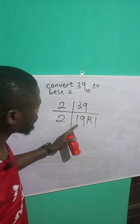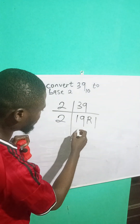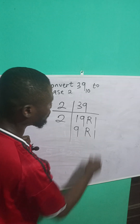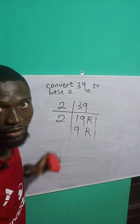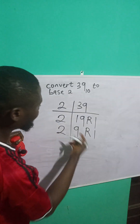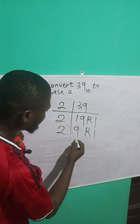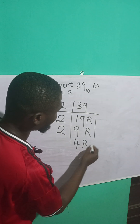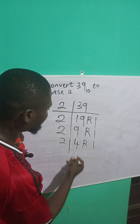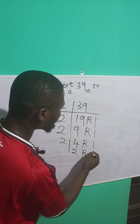2 divides 19 is 9 remainder 1. 2 divides 9 is 4 remainder 1. 2 divides 4 is 2 remainder 0.